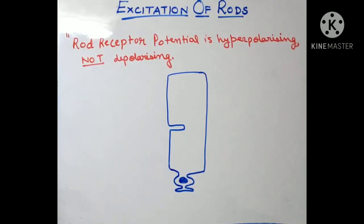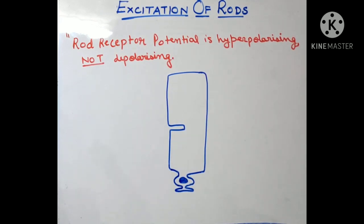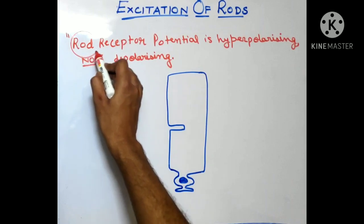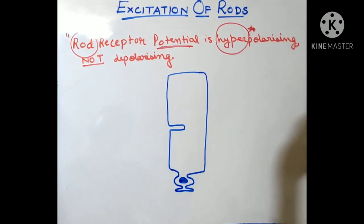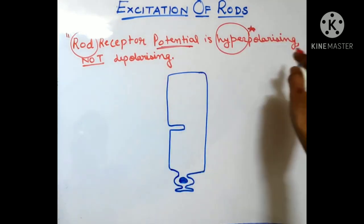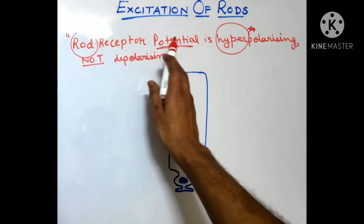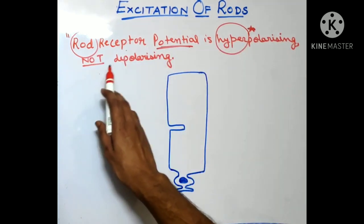Hello guys, welcome back to my channel. In this video we are going to study about excitation of the rods. This is a very unique topic in that most of the cells in our body get depolarized to get stimulated — most cells produce their action potential by depolarization. But in the case of rods, the action potential is generated not by depolarization but by hyperpolarization. As stated in Guyton: 'Rod receptor potential is hyperpolarizing, not depolarizing.'